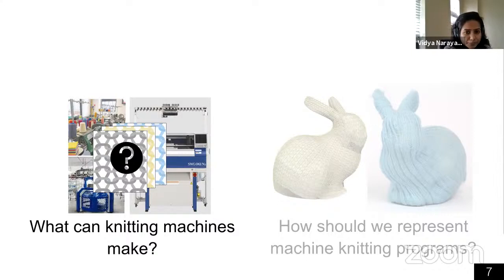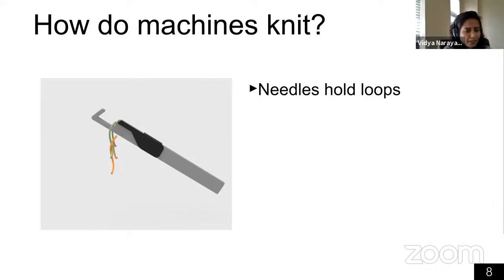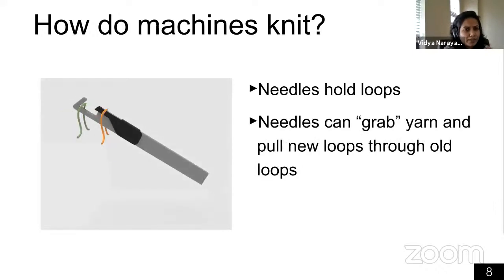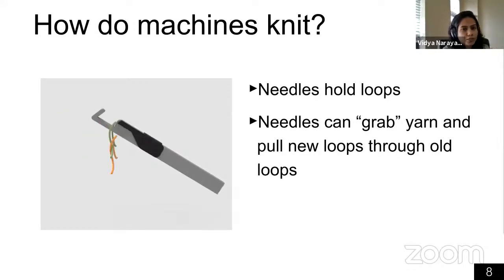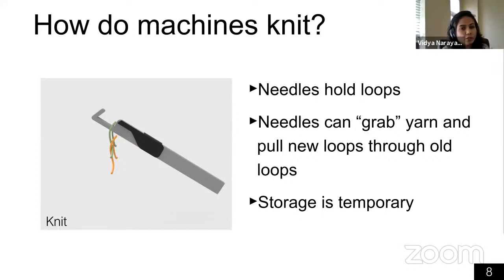Knitting involves loops, so there needs to be a way to make and store them — that's where needles come in. Here I have an example of a needle with a hook-like shape at the end. These hooks can store loops. The needle is really a tiny machine: if you place a yarn in front of it, it can grab that yarn, turn it into a loop, and pull it through the loops it's holding. We'll call this the knit operation — think of it as the only operation that this needle can actually perform. Storage is temporary in the sense that once a new loop gets formed through the old one, the old loop is dropped and only held by the new active loop.